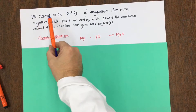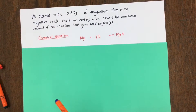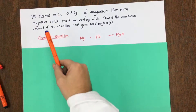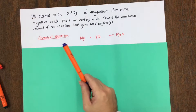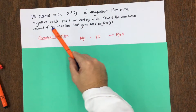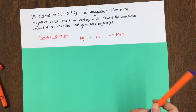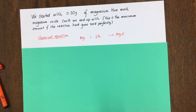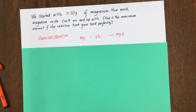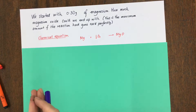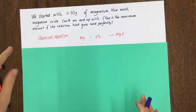So here we know that we started with 0.3 grams of magnesium. The question asks: how much magnesium oxide could we end up with? This is the maximum amount if the reaction had gone 100% perfectly. Chemical reactions never go 100% perfectly, but we're going to work out how much magnesium oxide we would end up with if it did.